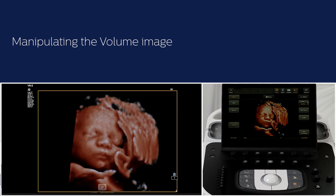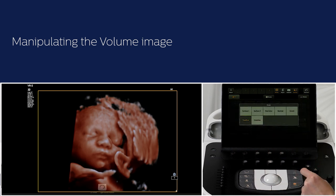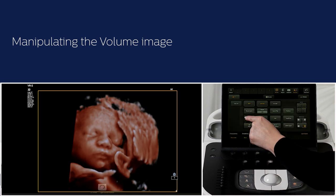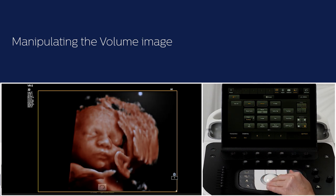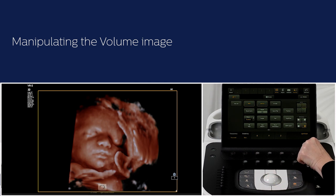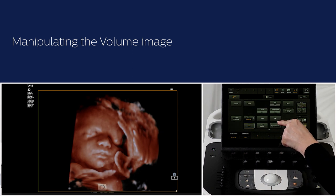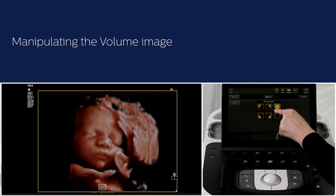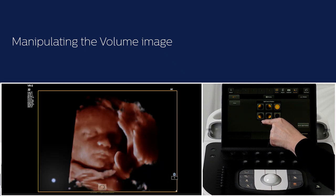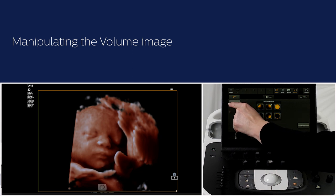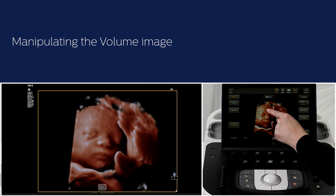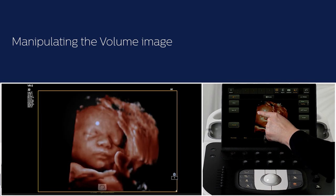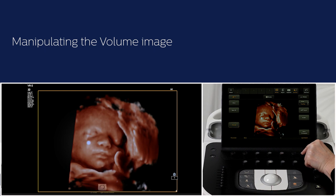Different rendering options are available for the volume image. Press vision on the touch screen to see different options. The true view vision or rendering has a light source that can be moved using the trackball around the volume image and in depth through the volume by turning the rotary knob. On the second page of the touch screen, press light positions. You can choose from different positions for the light source. The volume image should be the active plane to adjust the light source with the trackball. Touch view can also be used to manipulate the volume image and the light source on the touch screen. Tap once on the touch screen and then move the light around. Turn the rotary knob to change the light depth.